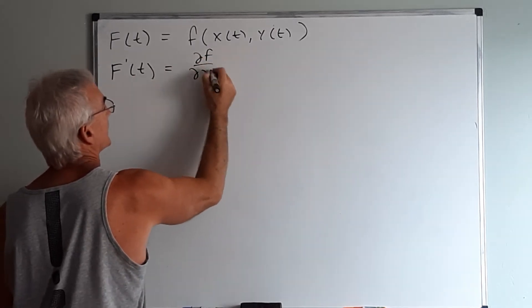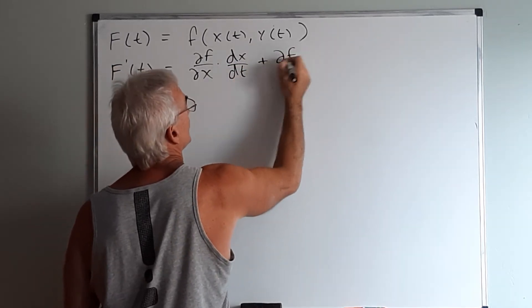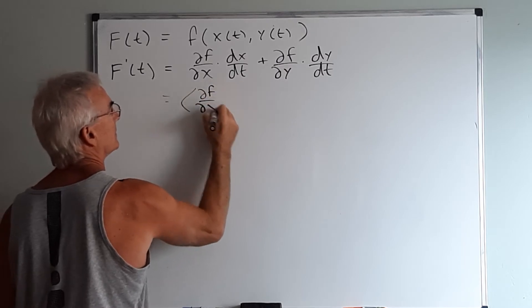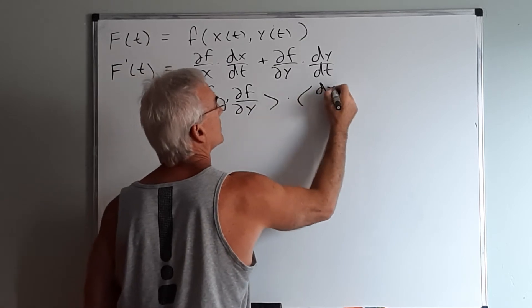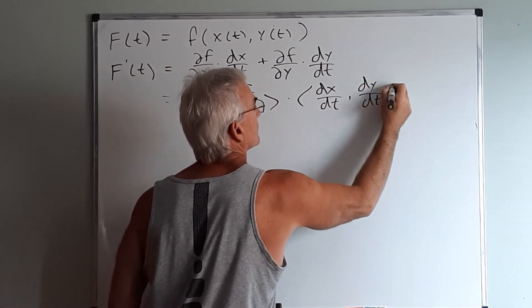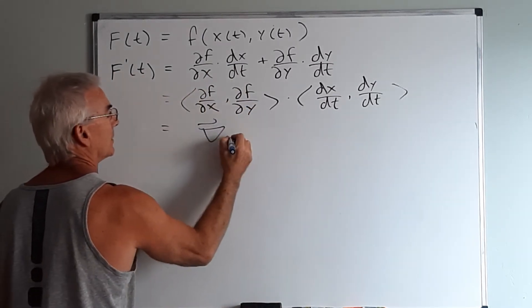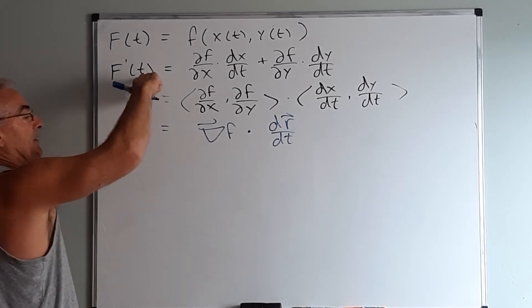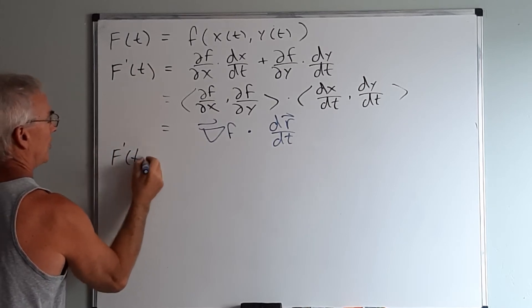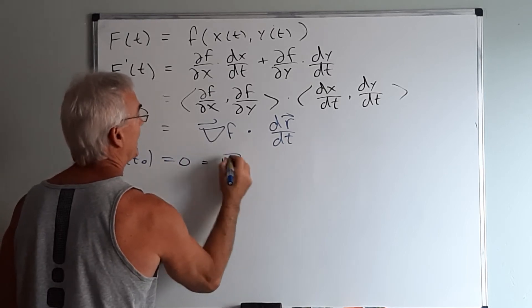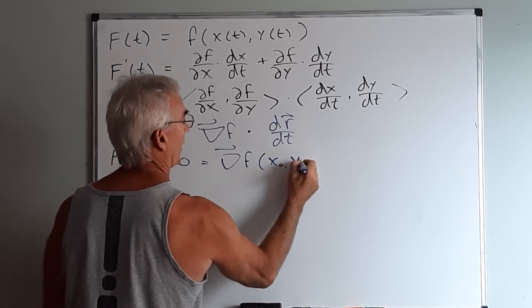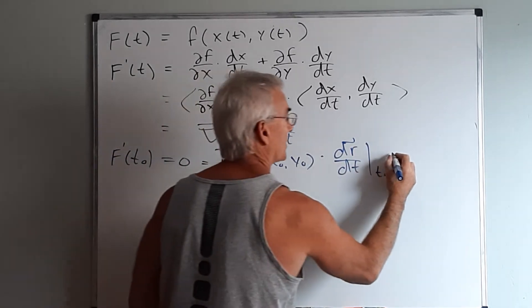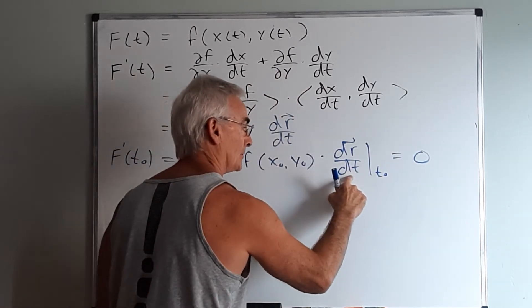This would be the partial of f with respect to x times dx dt plus the partial of f with respect to y times dy dt and like before we recognize that looks like a dot product, very specifically between these two quantities here, which we recognize as the gradient of f dotted with dr dt. Now we did this before but at this point if I evaluate this now at t naught so if I said f prime of t naught which we know equals zero that would equal the gradient evaluated at x naught y naught dotted with dr dt evaluated at t naught and that quantity has to be zero which proves that the gradient vector is orthogonal to the velocity vector again.